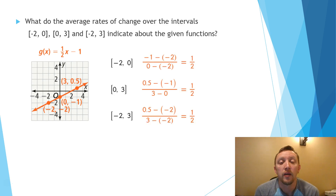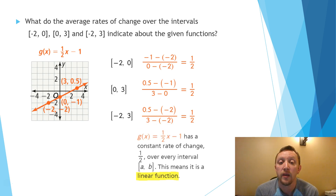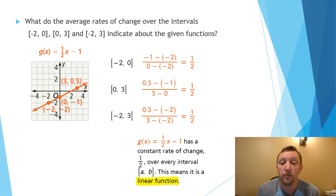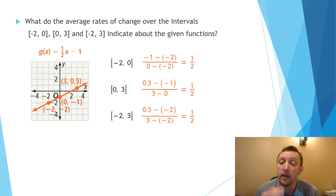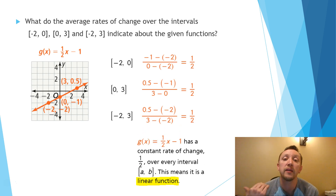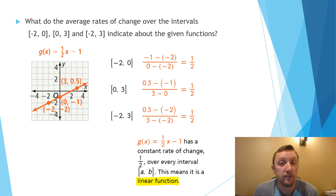For the next function, if we find the rate of change from negative 2 to 0, from 0 to 3, and from negative 2 to 3, they all end up being one half. So this is a linear function. The key difference: the constant function has a slope of 0, while this one has a consistent slope of one half but is not a constant function — it's linear. If the same rate of change appears between any two points on a line, the graph is linear.